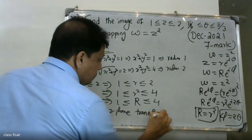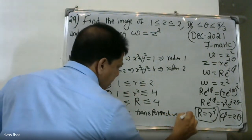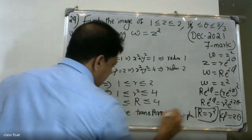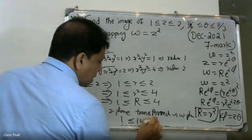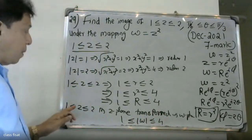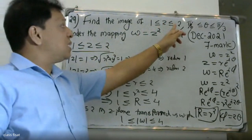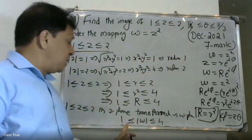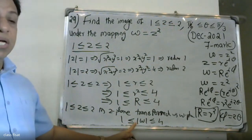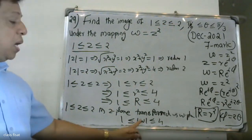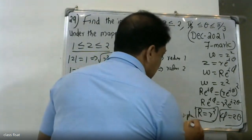Therefore in the w-plane, the image of the radial condition 1 ≤ |z| ≤ 2 is 1 ≤ |w| ≤ 4, under the mapping w = z².